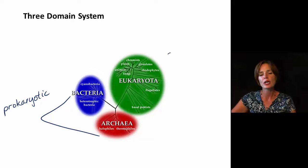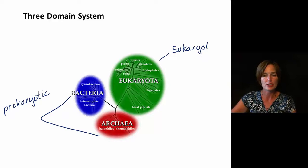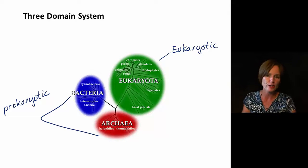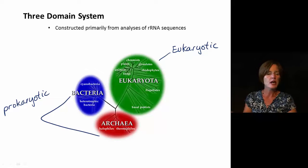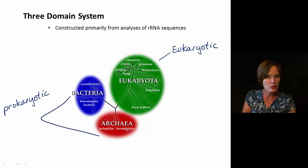And then we do have eukaryota, which is going to be our eukaryotic cell branch of this kind of overall tree of life. This three domain organization system is based primarily on analyses of RNA sequences, so based on ribosomal RNA sequences.